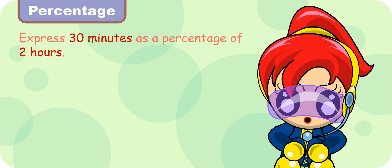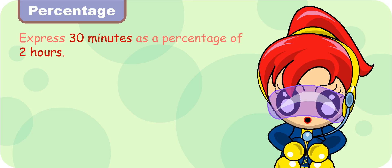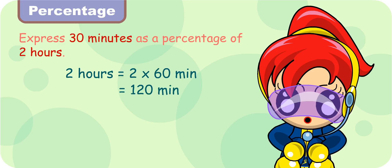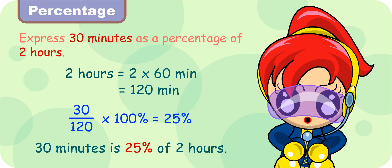Express 30 minutes as a percentage of 2 hours. Turbo Girl, try to do this. Sure. 2 hours is 120 minutes, which is the base. So 30 out of 120 minutes in percentage is 30 over 120 times 100%, which is 25%. Good.